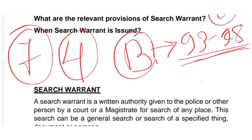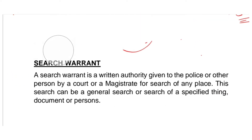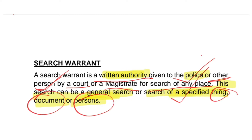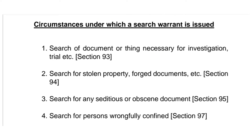Now let's understand the concept of search warrant. A search warrant is a written authority given to a police officer or any other person empowered in this behalf — meaning the court has empowered them — or issued by any magistrate, to search any place. This search can be a general search or a search for a specified thing, document, or person. So there are two types: general search and special search. In a special search, a warrant is issued for a specific thing, document, or person.